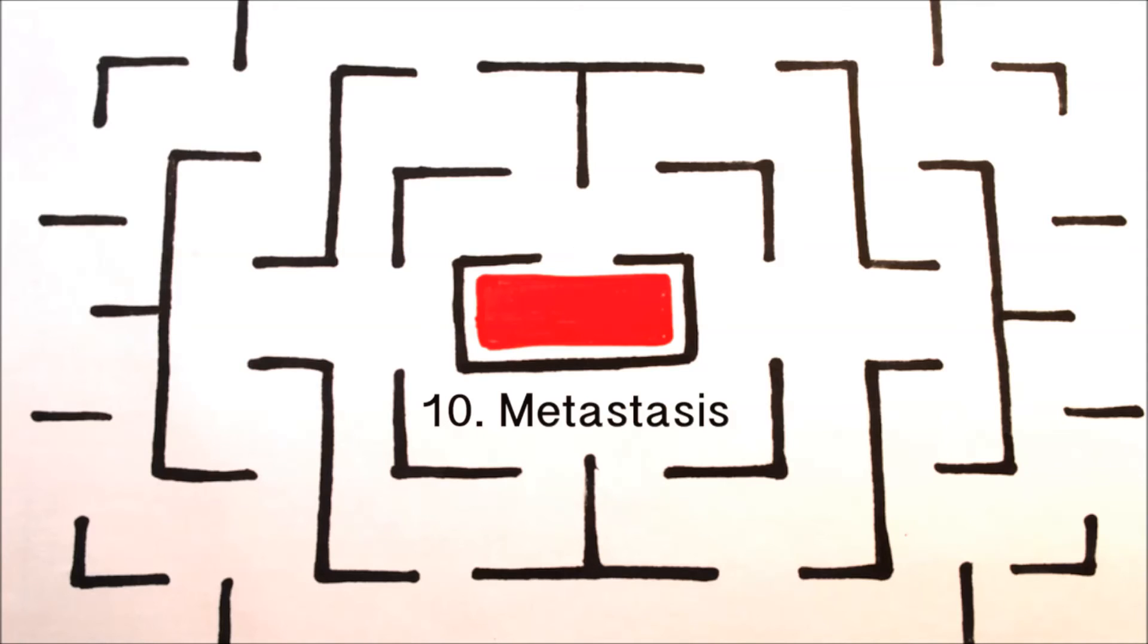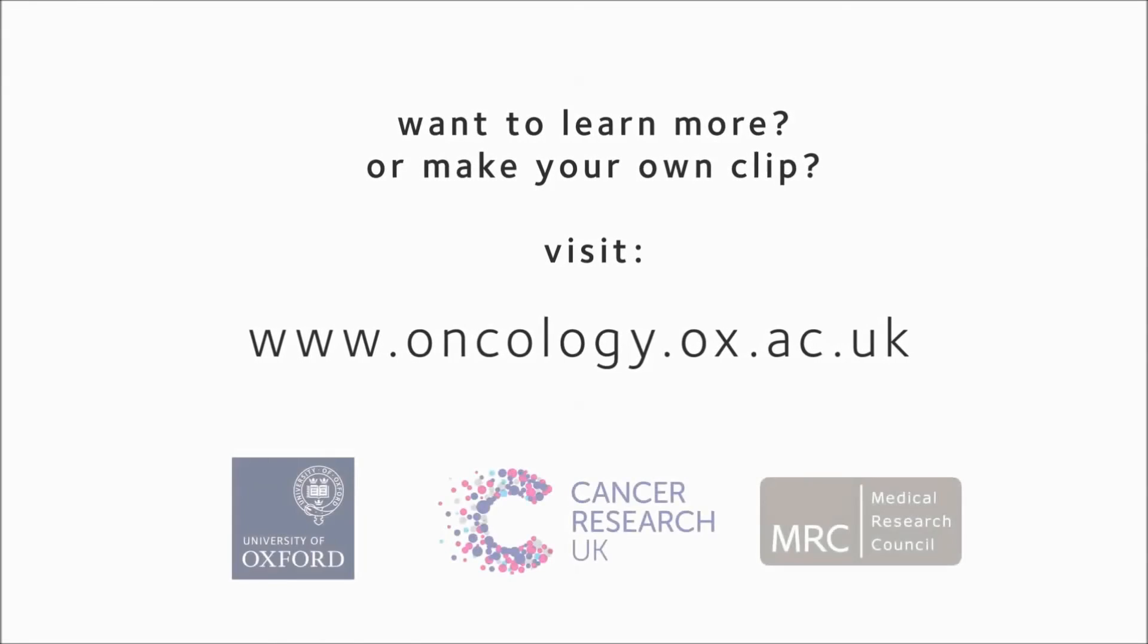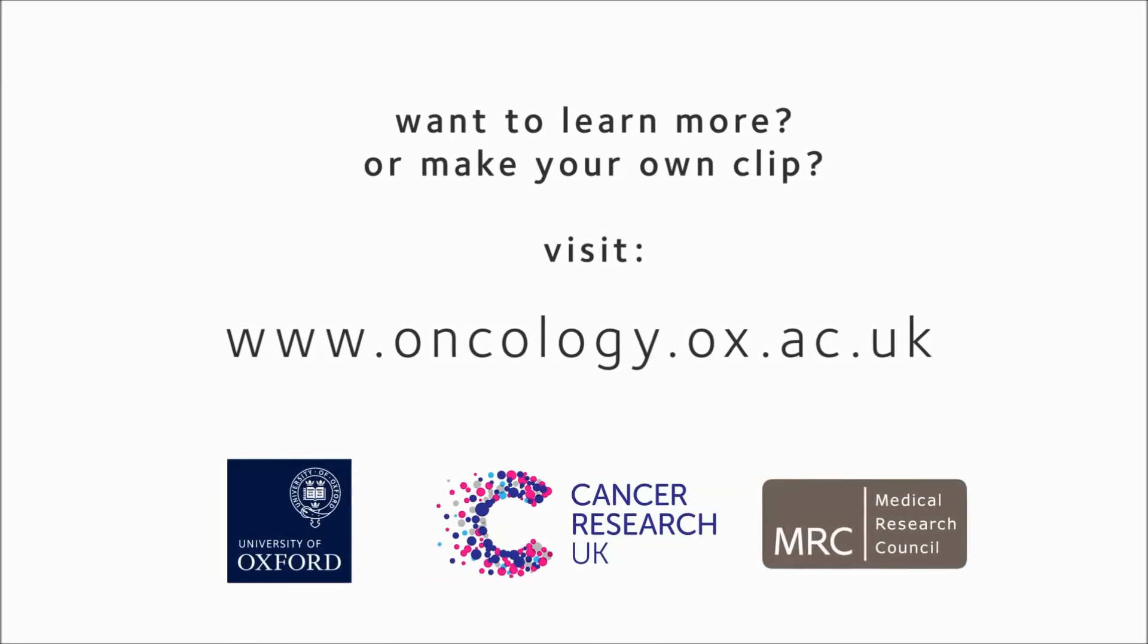Number ten, cancer cells are able to break away from the main tumor and travel through the bloodstream to form secondary tumors in other organs. This ability to spread through the body is known as metastasis.